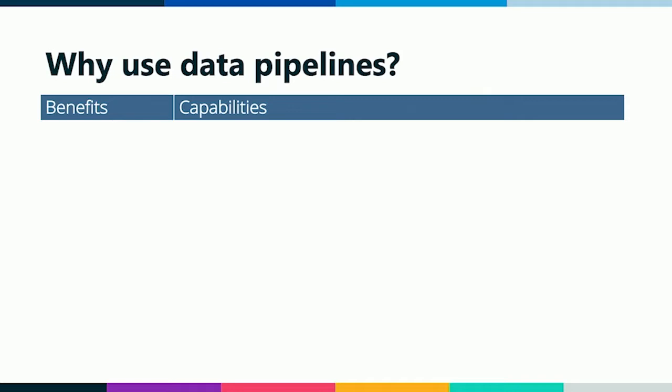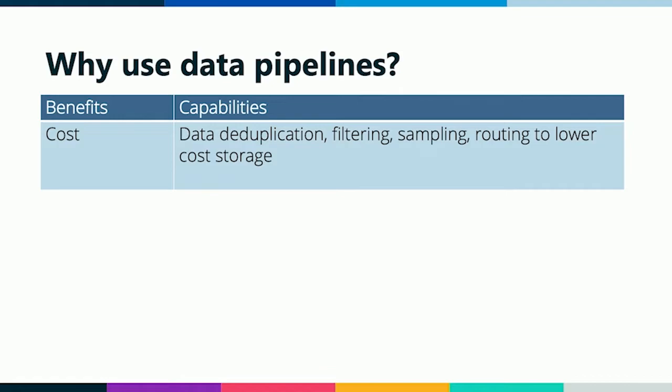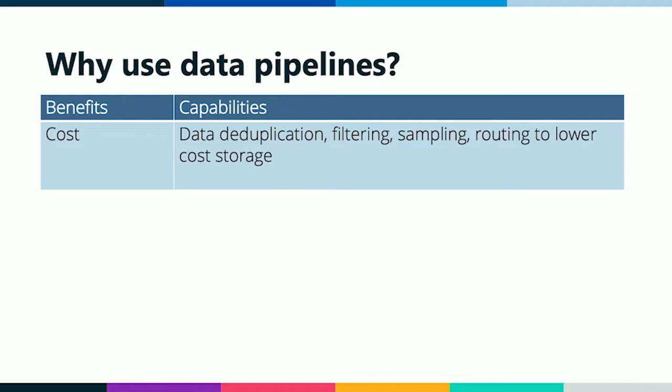Our team strongly recommends that if you're using OpenSearch for observability, you have a pipeline in front of it. One reason is to help with cost. A major cost of running OpenSearch is the storage cost — you have to store a lot of data, and with observability we're talking terabytes a day. You also have to worry about compute and memory cost; the more data coming in, the more you'll need, so you're increasing the cost of your cluster.